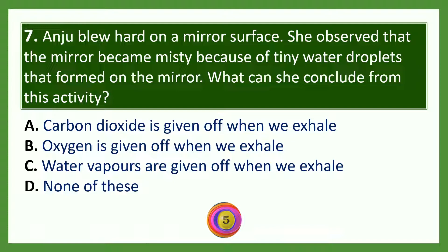Look at the classification table. Which of the following can X be? Options: A — blood vessel; B — brain; C — backbone; D — small intestine. The answer is small intestine. Lungs and nose belong to the respiratory system; food pipe and small intestine belong to the digestive system.